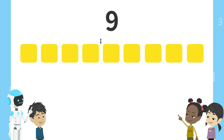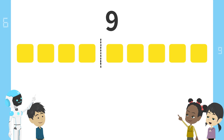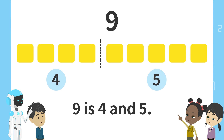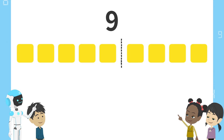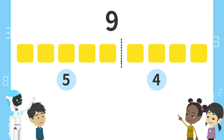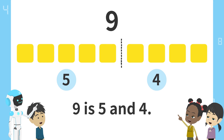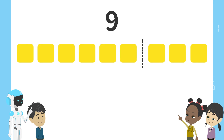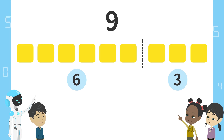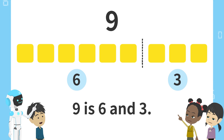Next, here. 4 blocks on the left and 5 blocks on the right. Next, here. 5 blocks on the left. 9 is 4 and 5. And 4 blocks on the right. 9 is 5 and 4. Next, here. Six blocks on the left and three blocks on the right. Nine is six and three.